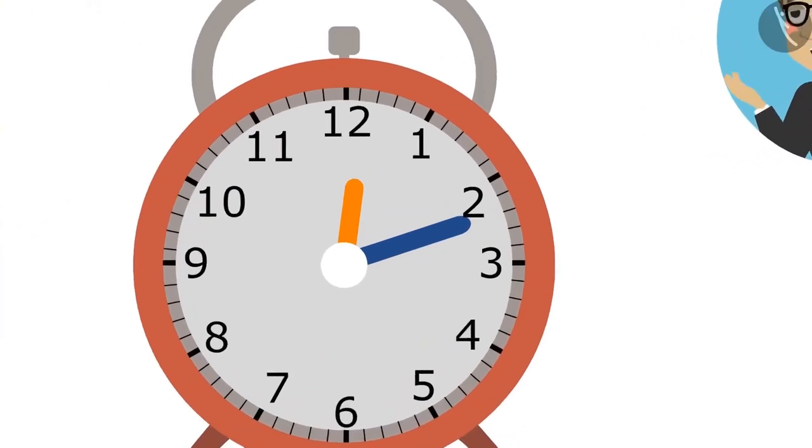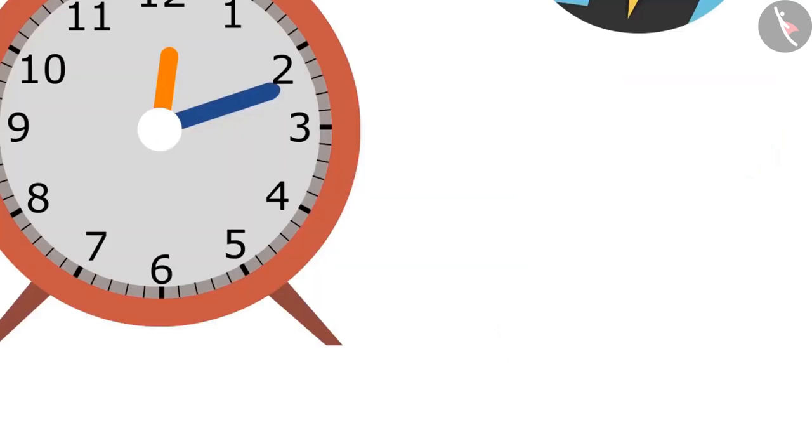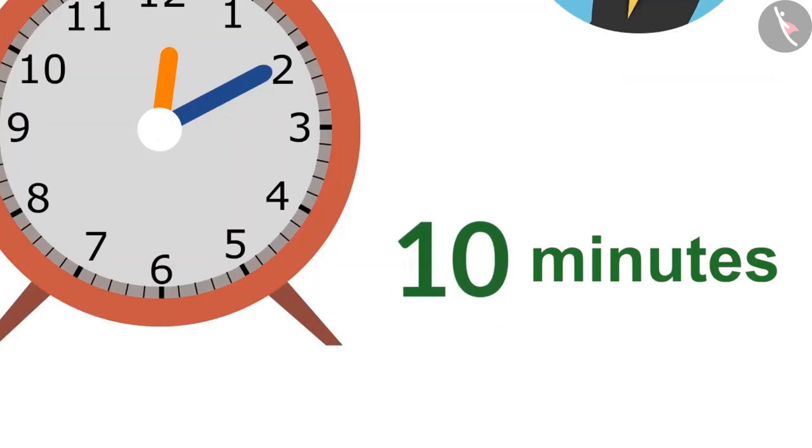Look Neha, are you seeing these small marks in between the numbers of this clock? Yes, sir. Every mark tells a minute. For example, if the minute hand is on 2, we know that it has been 10 minutes. But if it comes to the next mark from 10, we will say it is 11 minutes.